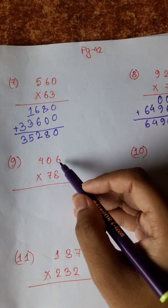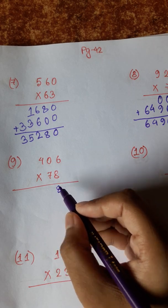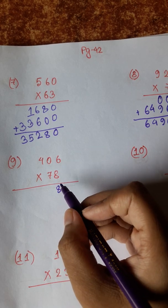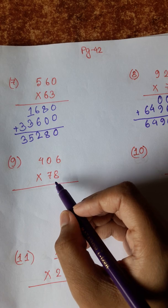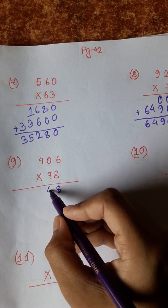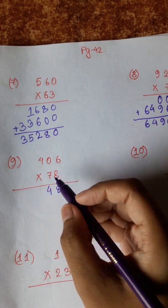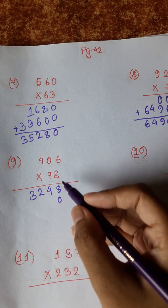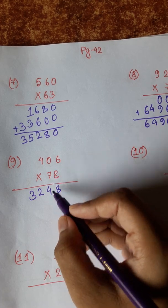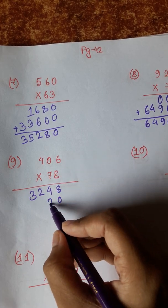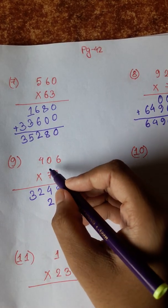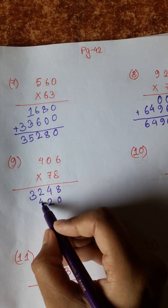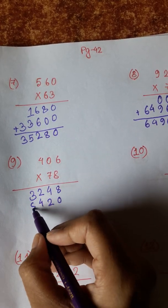8, 6. 48, 8 8 8 8 8 8 8 4s are 32. 6 7s are 42. 7 0s are 0 plus 4 is 4, 7 4s are 28.